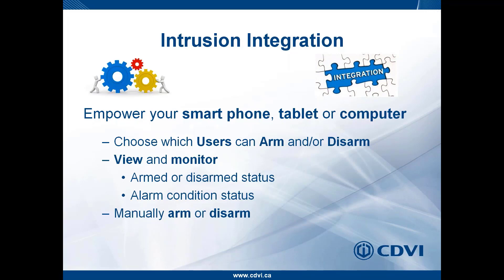We also provide alarm and intrusion integration. Any alarm system with a key switch arming option can be integrated. Through any web-enabled device — smartphone, tablet, or computer — you can arm and disarm the alarm system, and choose which users have arming rights, disarming rights, both, or neither. Through both the web interface and Atrium software you can view and monitor the alarm status — whether armed or disarmed, and whether an alarm is active.